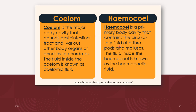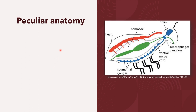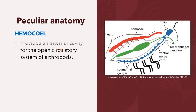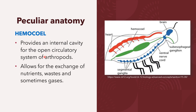When we compare that with the coelom, the coelom is the major body cavity that bounds the GIT and various other body organs of the annelids to chordates. The fluid inside the coelom is known as the coelomic fluid. The haemocoel provides an internal cavity for the open circulatory system of the arthropods. It also allows for the exchange of nutrients, waste, and sometimes gases.